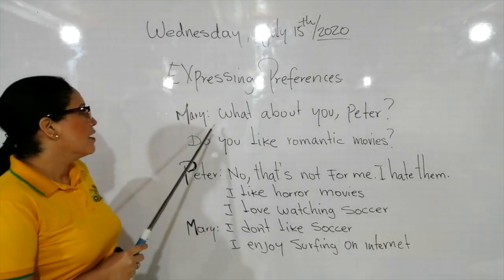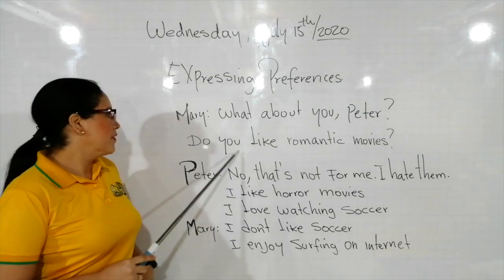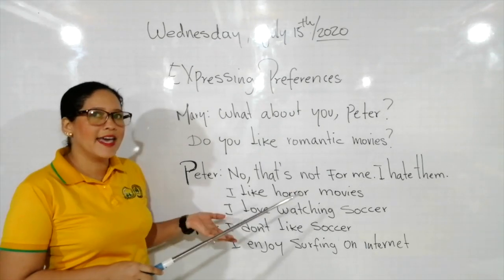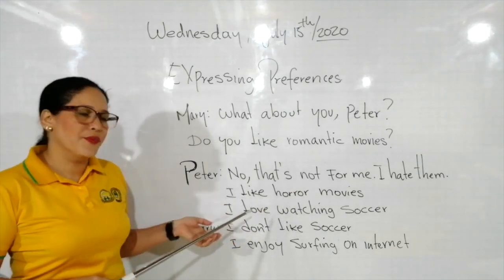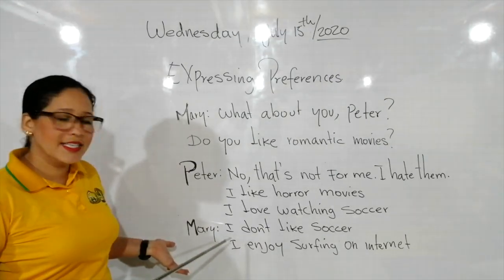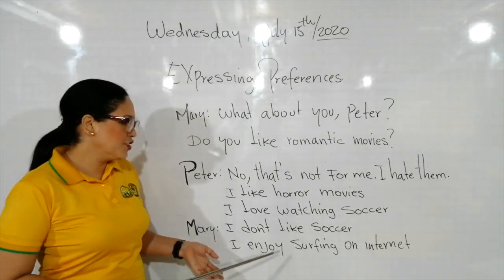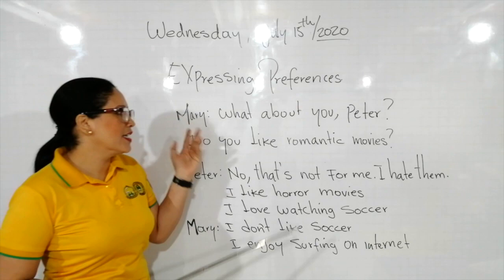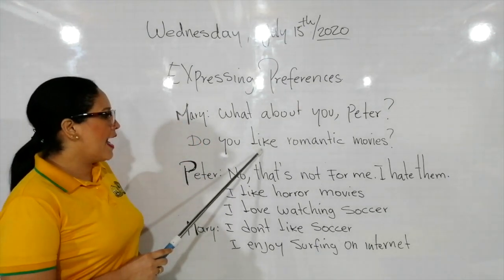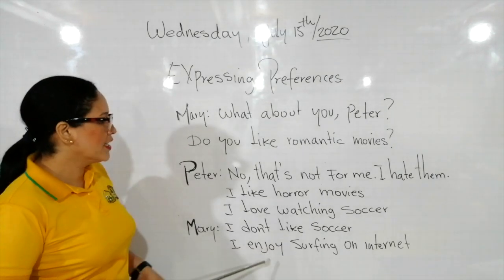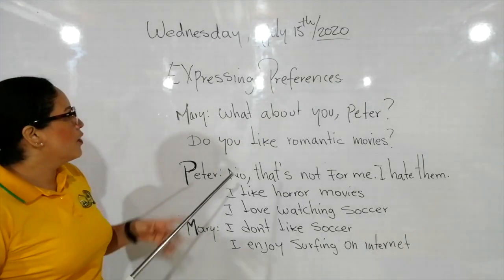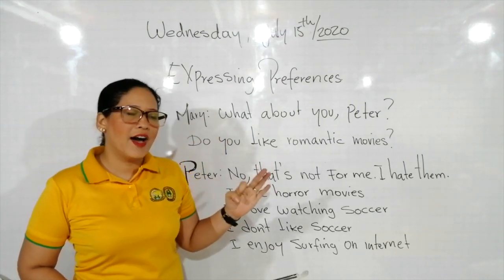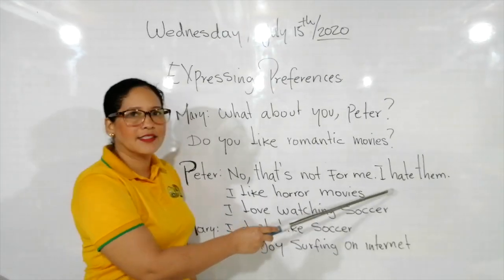Una vez más la pronunciación del diálogo: what about you, Peter? Do you like romantic movies? No, that's not for me. I hate them. I like horror movies. I love watching soccer. Mary dice: I don't like soccer. I enjoy surfing on the internet. Aquí vemos los verbos like, enjoy, love and hate trabajados en contexto.